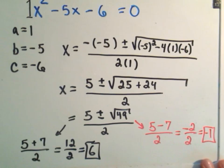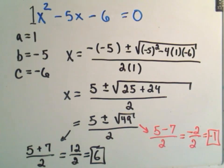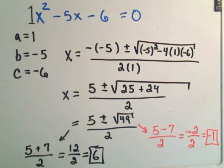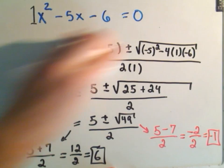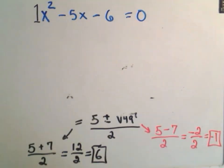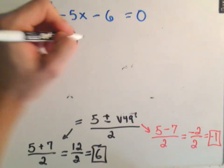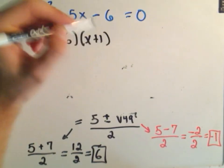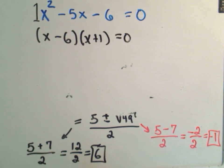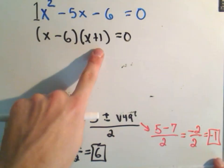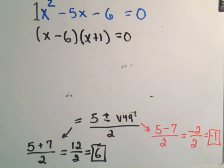If you had factored this at the beginning, you would have gotten those exact values anyway. If you factored this as (x - 6)(x + 1) and set each piece equal to 0, one solution would be x = 6 and the other would be x = -1.